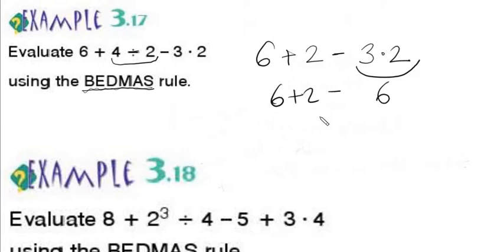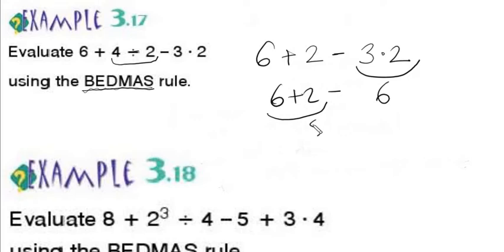Then at this level we do it from left to right, because we have addition and subtraction together. From left to right: 6 plus 2 is 8, 8 minus 6, so the answer will be 2.